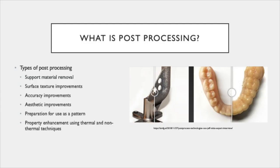Most alternative manufactured parts require some sort of post processing after the part is complete to ensure that the part will work for its intended function and fit where it needs to. The major upside of post processing is that this process allows parts to overcome limitations and enhance the components from their original states. The most common types of post processes are support material removal, surface texture improvements, accuracy improvements, aesthetic improvements, preparation for use as a pattern, and property enhancements using thermal and non-thermal techniques.